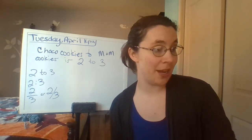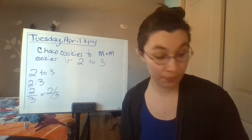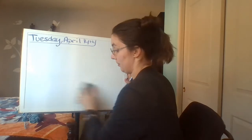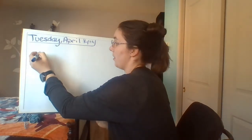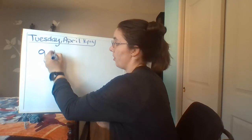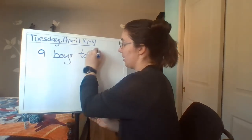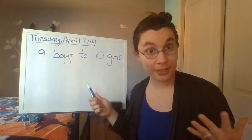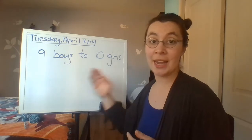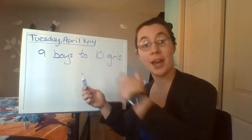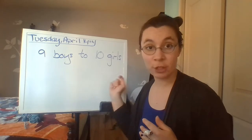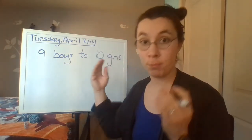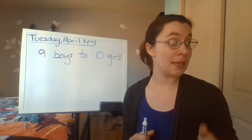In questions like the one you had on your homework yesterday, the ratio of girls to boys in the class — there were ten girls and nine boys. A lot of people said the correct answer: there are nine boys for every ten girls, or there are ten girls for every nine boys. Be very specific about which one is going first.